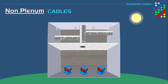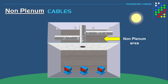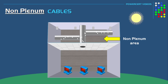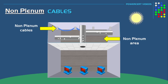Buildings that don't have plenum spaces will have air ducts encapsulating the airflow, so there is no open airflow circulation because the air is encapsulated in them. The chances of a fire happening and recirculating toxic fumes are minimal, so this is an example where you could use non-plenum cables.